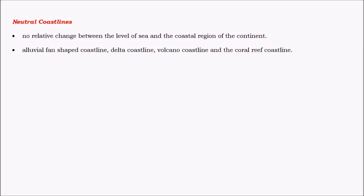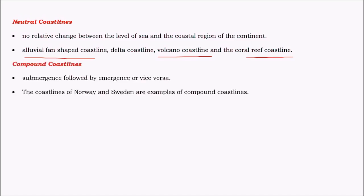Neutral coastlines are the ones where both submergence and emergence are completely zero. These coastlines give rise to regions like deltas, which remain stable for millions of years. For a delta to be formed, the region needs to be stable for millions of years, and neutral coastlines facilitate the formation of deltas. Volcano coastlines and coral reef coastlines like in Australia are also examples of neutral coastlines.